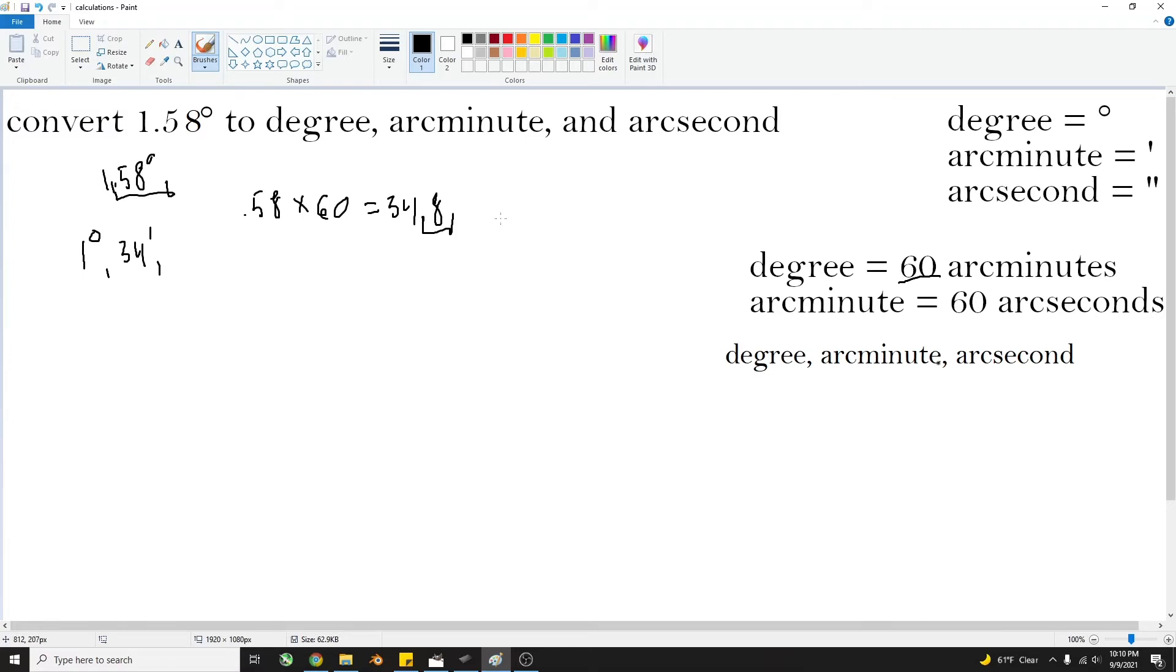Now you take the 0.8, and you multiply that by 60. That'll equal 48. And that's how you get your arc seconds.